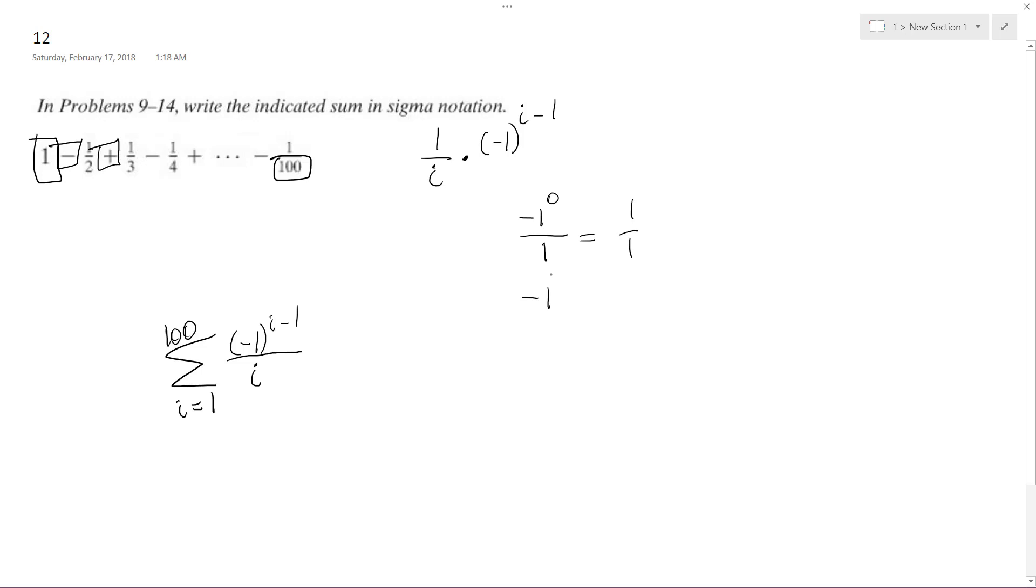So again, negative 1 raised to 1 over 2, we get negative 1 and a half. And then we'll just test it on 3. Negative 1 raised to 3 minus 1 over 3, we get negative 1 raised to 2 over 3, gives us 1 third, positive 1 third.